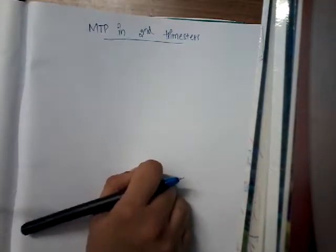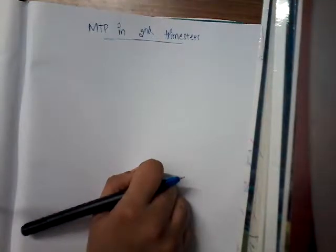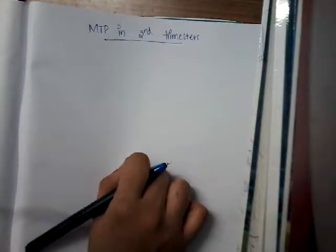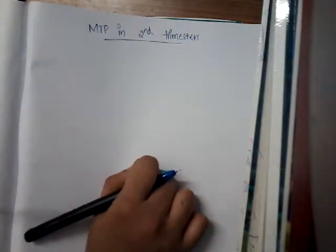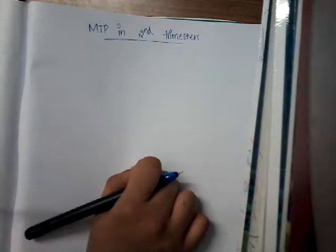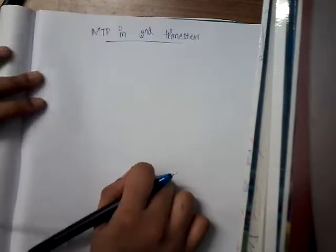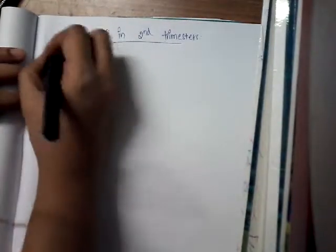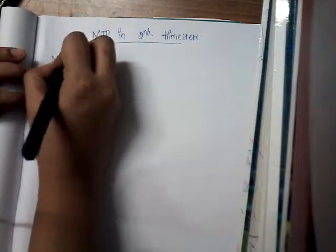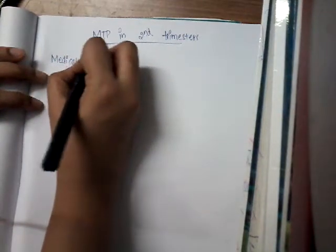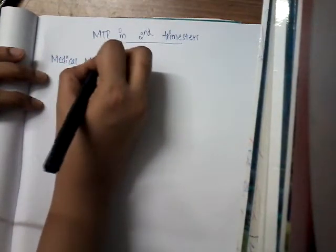Indications also include any types of fetal anomalies — chromosomal or congenital — in which cases we should do medical termination of pregnancy, and intrauterine death of the fetus. There are medical methods, intra-amniotic or extra-amniotic instillation methods, and surgical methods.